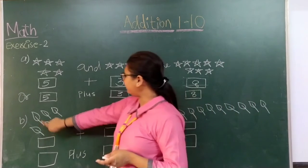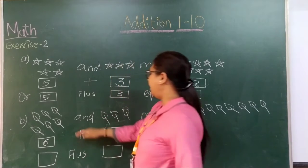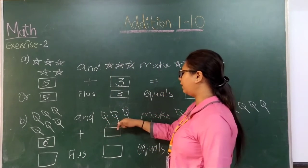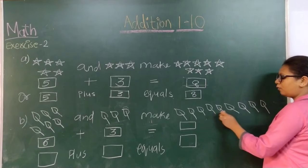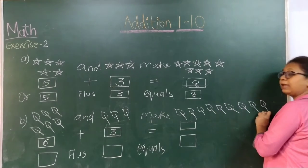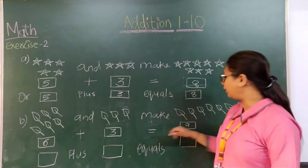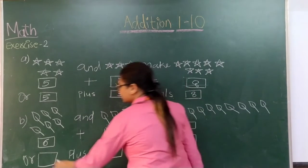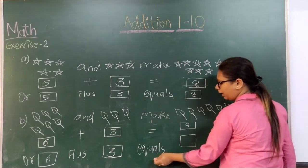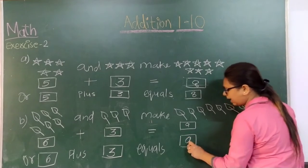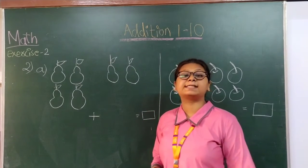Next one. How many leaves? 1, 2, 3, 4, 5 and 6 — so 6 leaves over here. And 3 more over here: 1, 2 and 3. So when we mix them: 1, 2, 3, 4, 5, 6, 7, 8, 9 — so 9. So 6 plus 3 is equal to 9. You can write it in both forms. So students, moving forward to exercise number 2, question number 2.